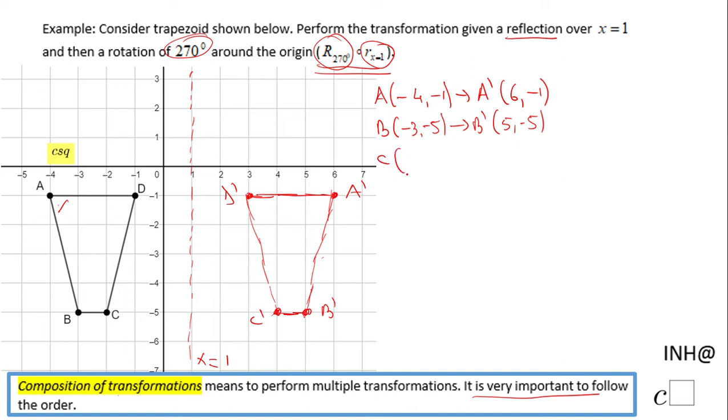C, which has the coordinates negative 4 and negative 5, and the last one D, which has the coordinate negative 1, negative 1.